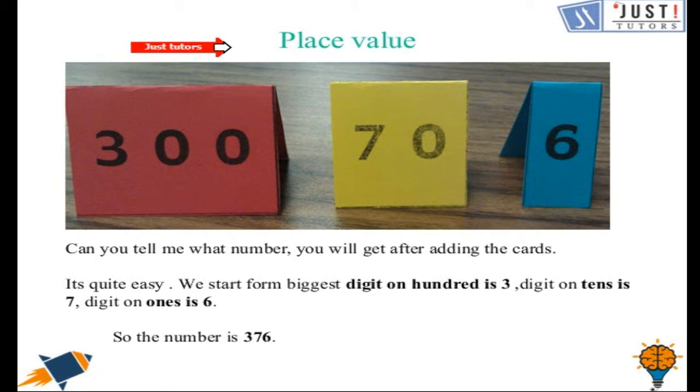Let's say we have expanded form. Then how we can write the number. Here we have an example. In the 3 cards we have 300, 70 and 6. And they represent expanded form. If we need to write the number, that is really easy. We can start from the biggest number.